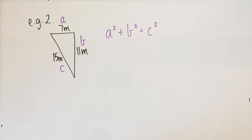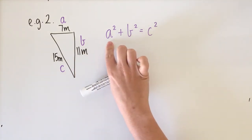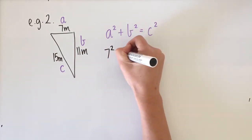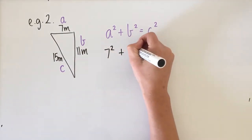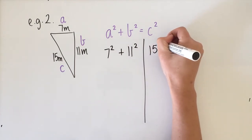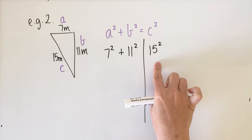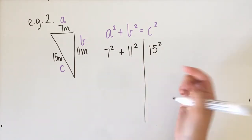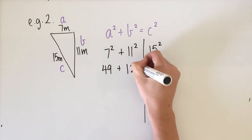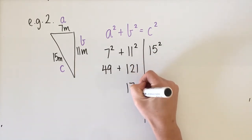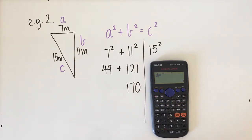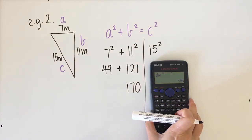Next, substitute our numbers for our pronumerals. A is going to be 7 squared, b is going to be 11 squared, and c is going to be 15 squared. 7 squared is 49, 11 squared is 121, and adding those together we get 170. If you don't know what 15 squared is, you can use your calculator — 15 squared is 225.